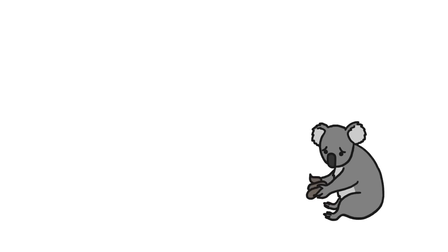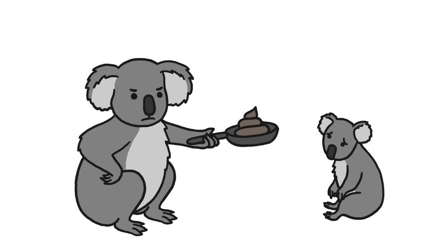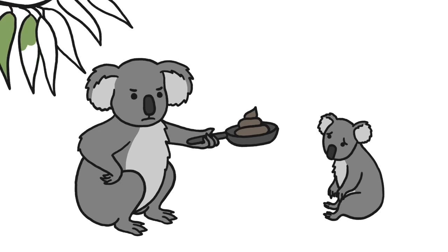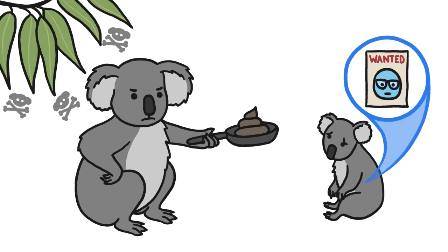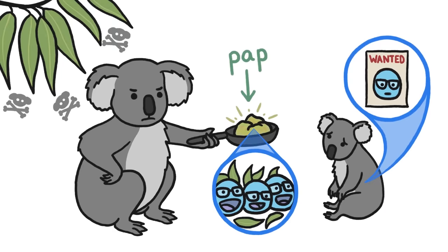Koalas, too, must eat their own poop, or at least their own mom's poop. They have a specialized diet of eucalyptus leaves, which are both fibrous and toxic. And koala babies aren't born with the specialized bacteria needed to break it down. So for several weeks, the baby just eats PAP, a soft, green poop chock-full of those bacteria that the mom makes special for her little one.